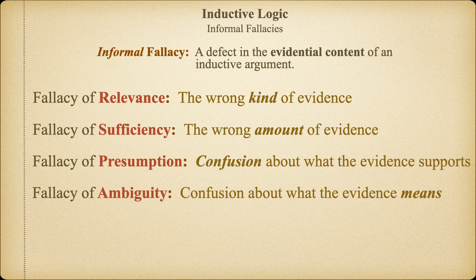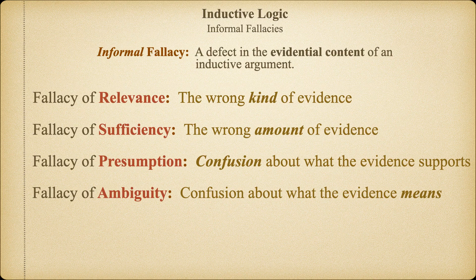We've already learned that a fallacy is an error in reasoning that undermines the legitimacy of an argument. Formal fallacies are caused by a structural defect in an argument, while informal fallacies are caused by some defect in the evidence that we're providing for the conclusion. We've also seen that there are countless ways that we could get defective evidence in induction. It might happen because the evidence we're using is irrelevant to the conclusion, like trying to use emotions instead of objective data as support. Beyond having the wrong kind of evidence as premises, we might also fail to have sufficient evidence to allow for a strong inductive inference.